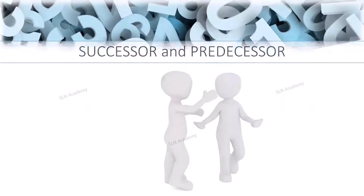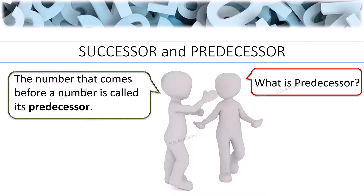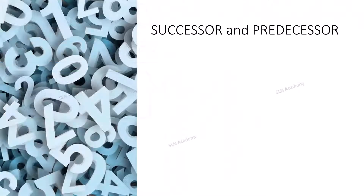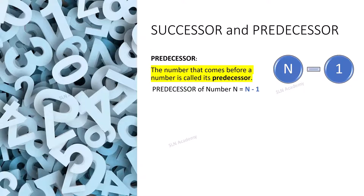Predecessor: What is a predecessor? The number that comes before a number is called its predecessor. If a number is n, then the predecessor of number n is n minus 1. To find the predecessor of any given number, you have to subtract 1 from the given number.